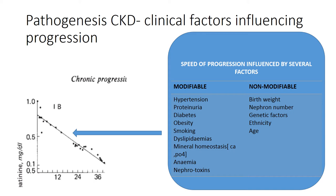They studied factors that influenced the steepness of the slope, identifying modifiable and non-modifiable factors. Non-modifiable factors include birth weight, which correlates with nephron number — patients born with lower birth weight tend to have fewer nephrons and, after an equivalent injury, suffer a greater percentage loss of nephrons. Genetic factors such as certain polymorphisms of the ACE gene, or the APOL1 gene in Africans, were also found to be risk factors for quicker progression.